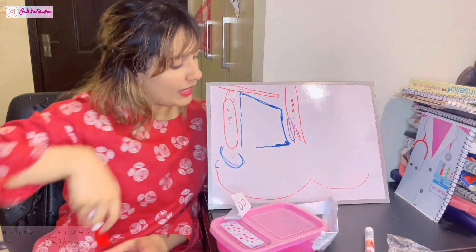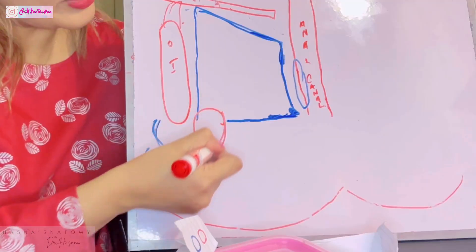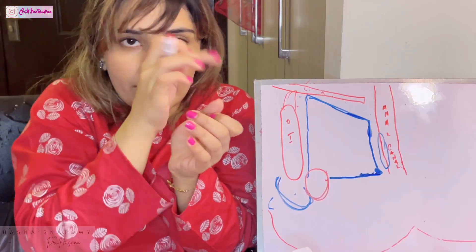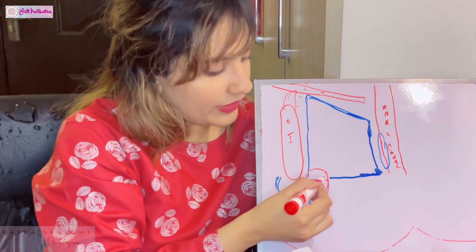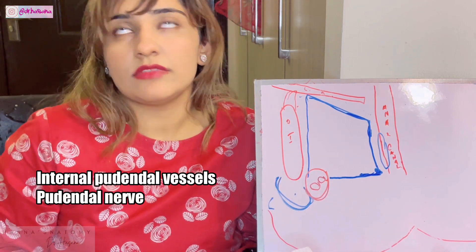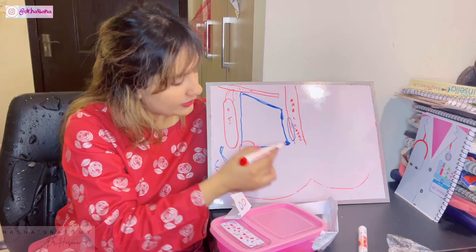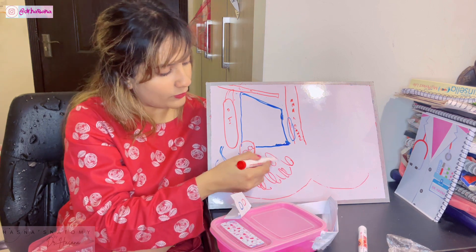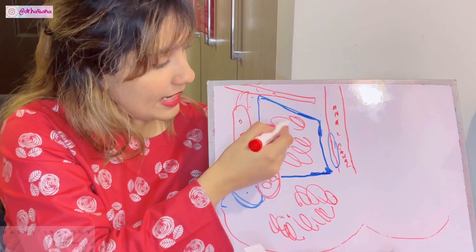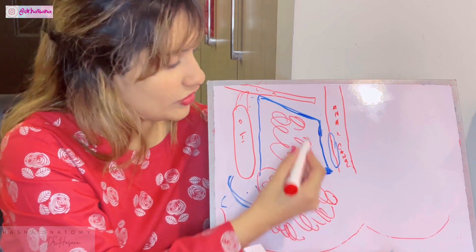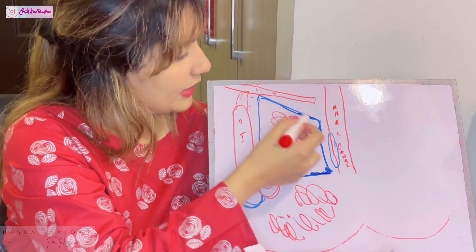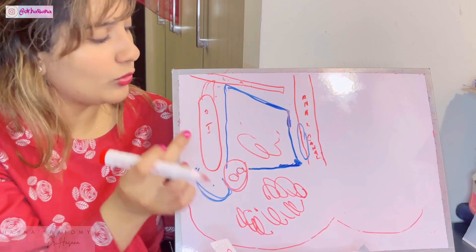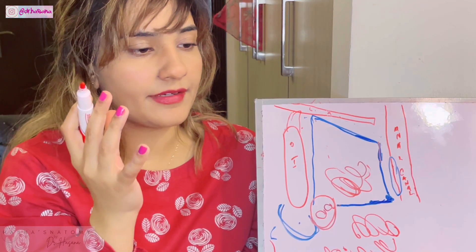The pudendal canal intervenes on the lateral side. It is basically an area covered with fascia all around, and within it lie the internal pudendal artery, the pudendal nerve, and the internal pudendal vein. Since we've enclosed a box here, we fill it up with fat — because the ischioanal fossa is basically composed of lots and lots of fat. So you can see: the perianal fascia here, the inferior pelvic fascia here, the anal fascia here, and the fascia covering the obturator internus here.